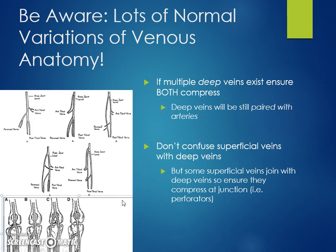If multiple deep veins exist, just ensure that they both compress, and you'll be able to tell they're deep veins because they'll still be paired with arteries. It's important not to confuse superficial veins with deep veins, as superficial veins won't have arteries alongside them. But note that if superficial veins join into a deep vein, make sure those superficial veins also compress right at the junction — a great example being the saphenous.